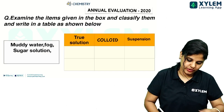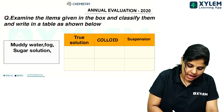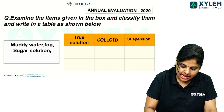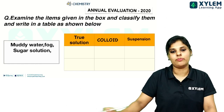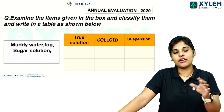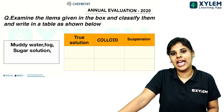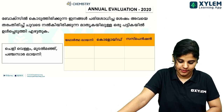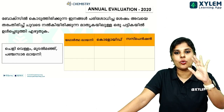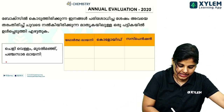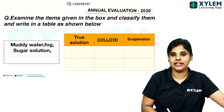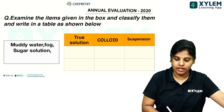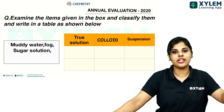Next question. Examine the items given in the box and classify them and write in a table as shown below. This is from the 2020 annual exam. The items are muddy water, fog, and sugar solution.